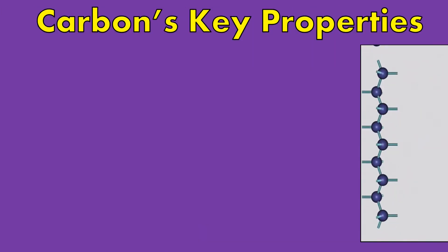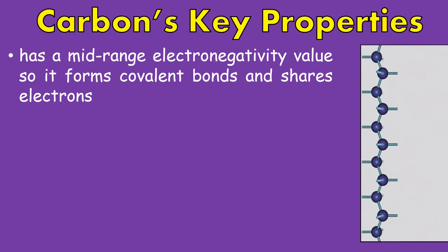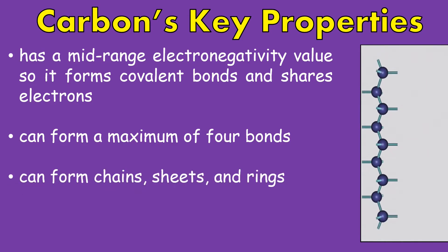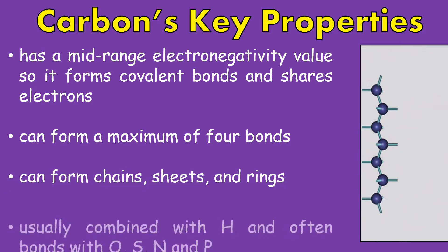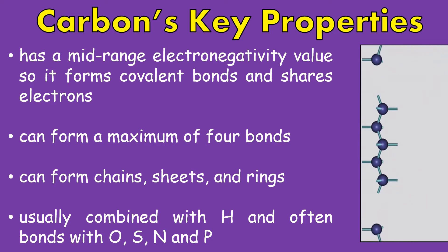What are the different key properties of carbon? First, it has a mid-range electronegativity value, so it forms covalent bonds and shares electrons. Second, it can form a maximum of 4 bonds. Third, it can form chains, sheets, and rings. And lastly, it is usually combined with hydrogen and often bonds with oxygen, sulfur, nitrogen, and phosphorus.